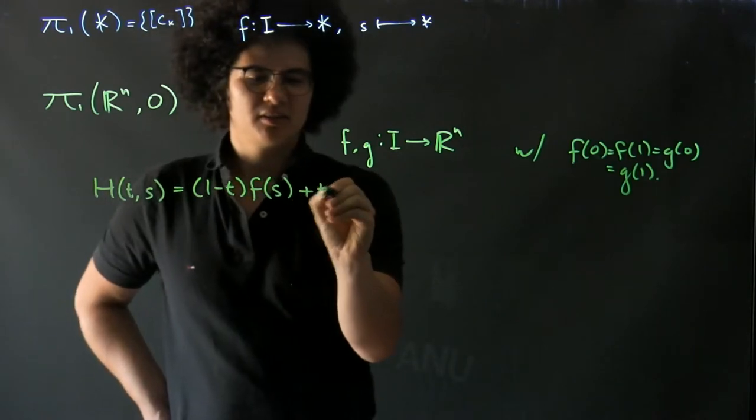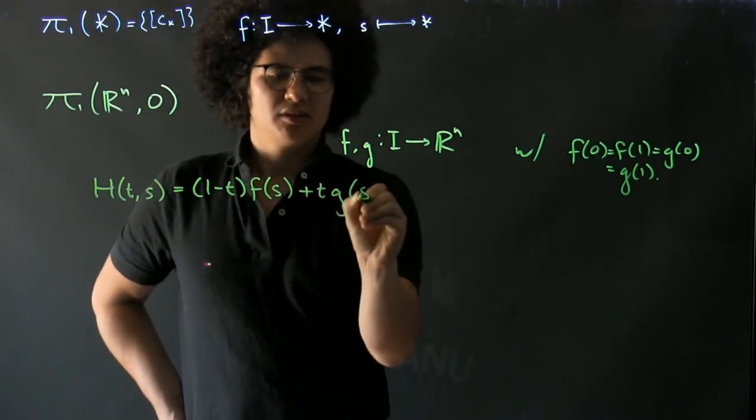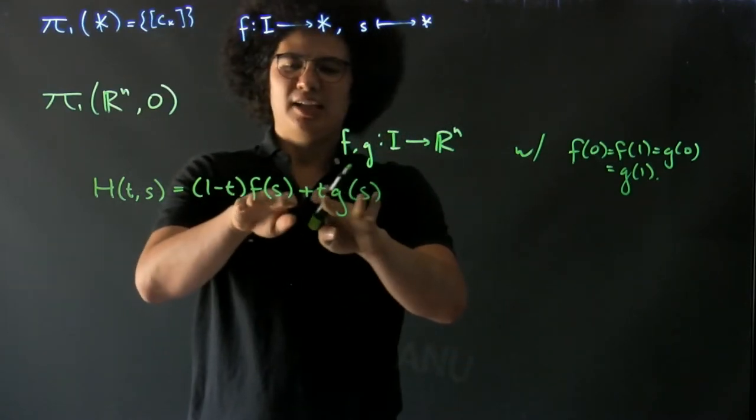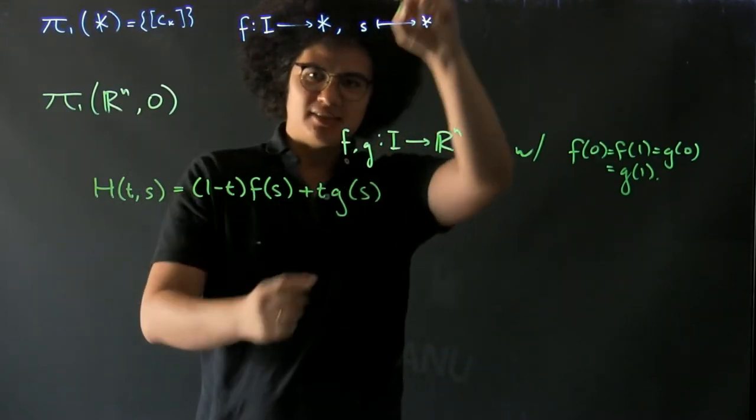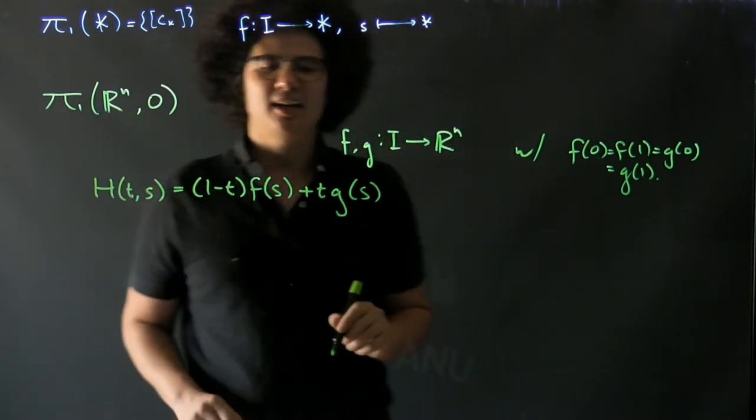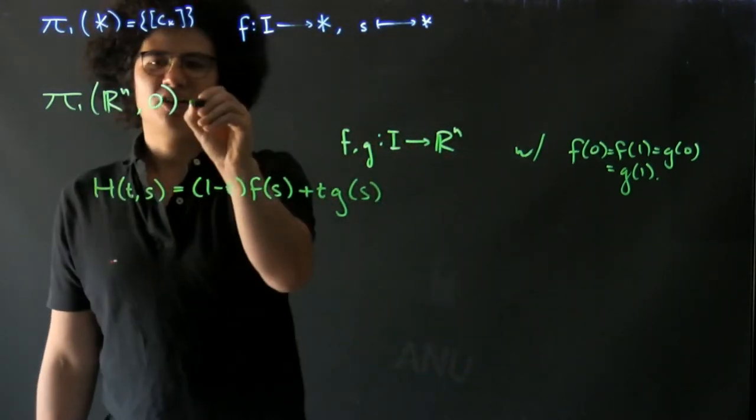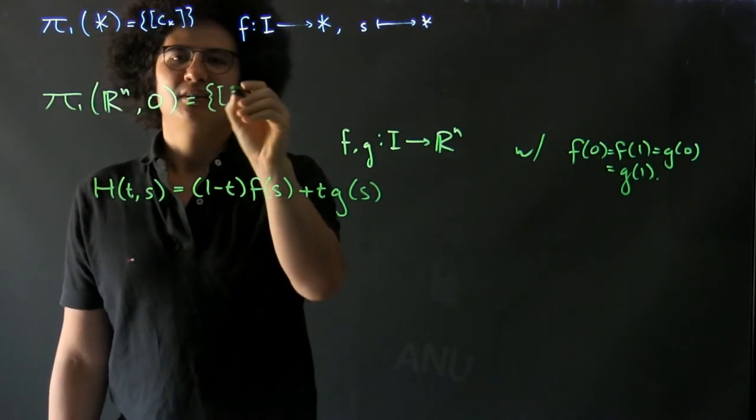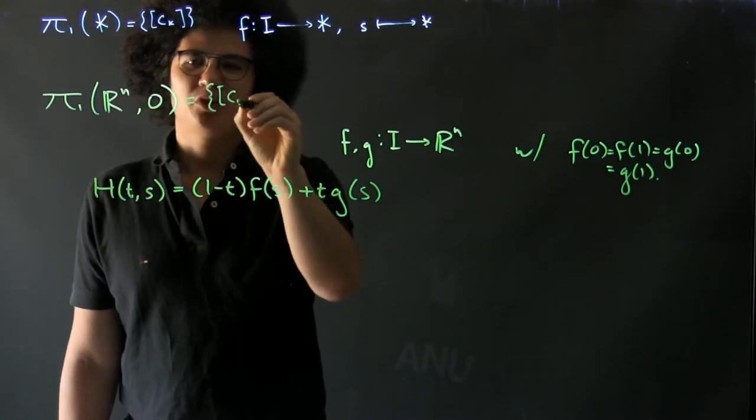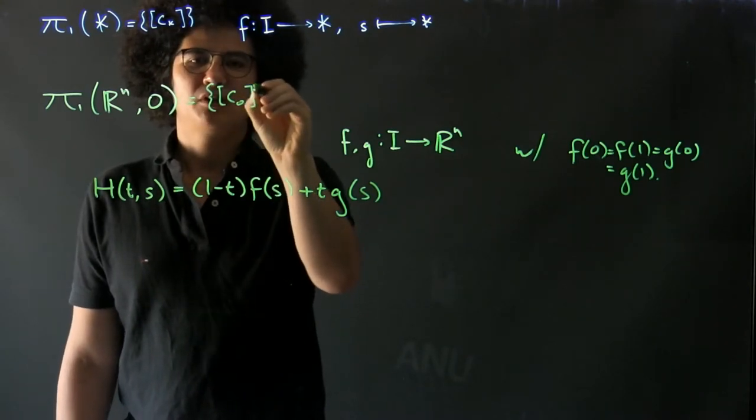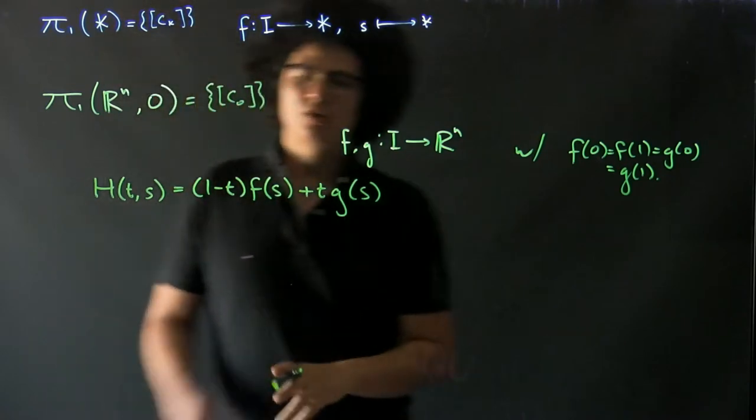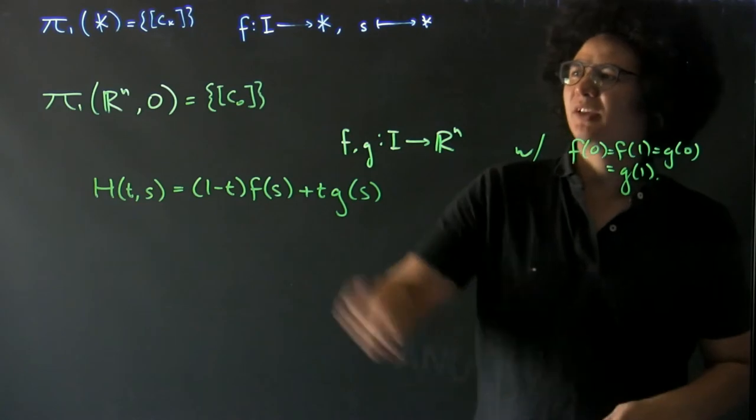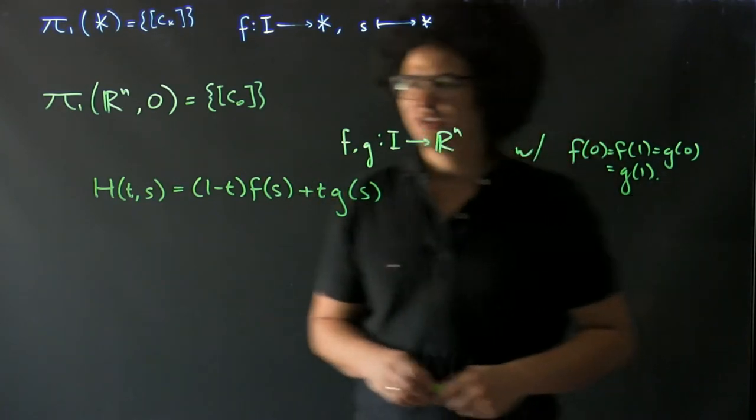This works because when interpolating between any F(s) and G(s), the line interpolating them is contained in R^n. So this also has a trivial fundamental group, with all homotopy classes of loops at the origin being homotopic to the constant loop at the origin.